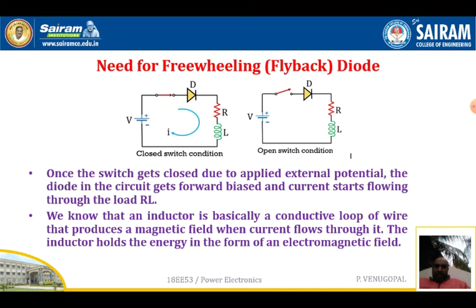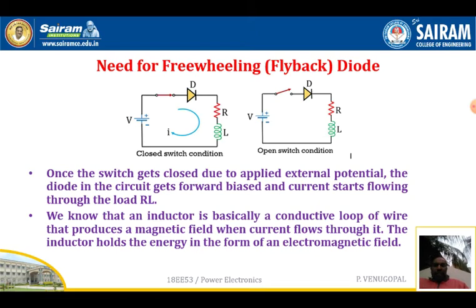Consider two circuits: one where the switch is closed and another where the switch is open. When the switch is closed, due to the applied external potential, the diode in the circuit gets forward biased — the positive terminal of the battery is connected to the anode and the negative to the cathode. When the diode becomes forward biased, current starts flowing through the load, which includes an inductor.